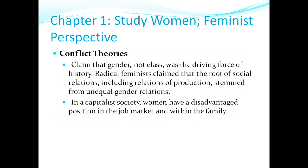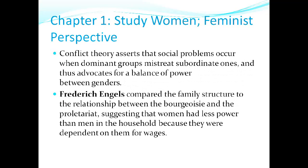Conflict theorists claim that gender, not class, was a driving force of history. Radical feminists claim that all social relations, including relations of production, stem from unequal gender relations. In a capitalist society, women have a disadvantaged position in the job market and within the family. Conflict theory asserts that social problems occur when a dominant group mistreats subordinate ones, and thus advocates for a balance of power between the genders. Frederick Engels, who worked closely with Karl Marx, compared the family structure to the relationship between the bourgeoisie and the proletariat.